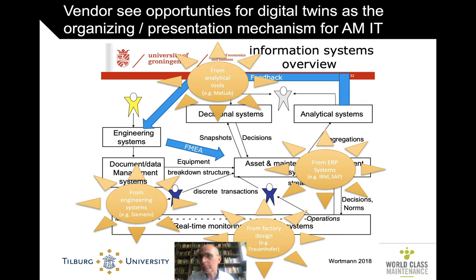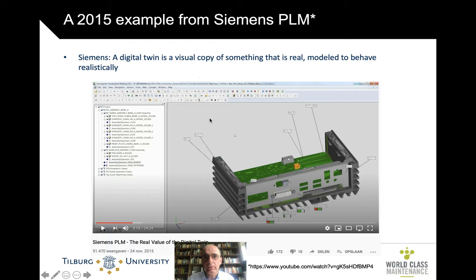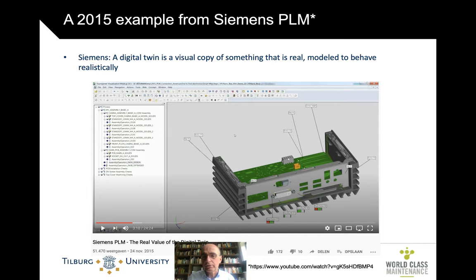Let me take you on a quick tour over the internet, from YouTube to SlideShare. From the engineering angle, here you've got an example from Siemens from 2015, who produce a software suite called PLM — Product Lifecycle Management. For them, Digital Twin is a visual copy of something that is real, modeled to behave realistically. Here's a 3D representation consisting of different modules that you can combine.